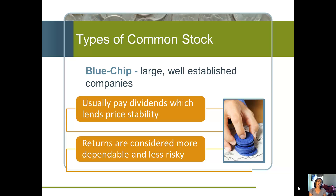Blue chip firms typically pay a dividend, which means they're fairly stable. Their returns are considered to be more dependable and they are less risky firms.